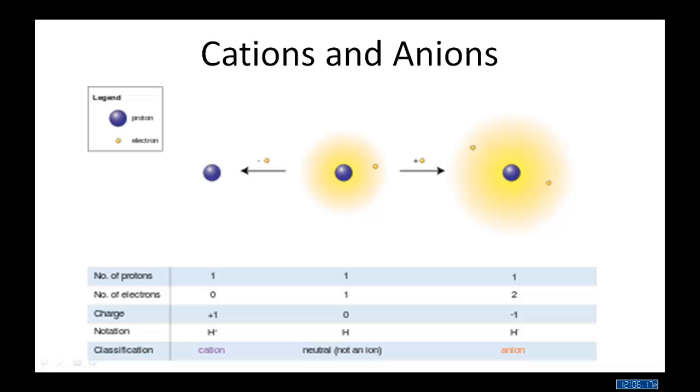So you start with the atom in the center. If it loses its electrons, it becomes the particle to the left. A positively charged hydrogen ion.